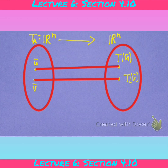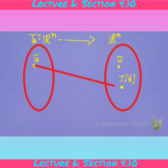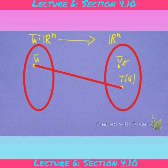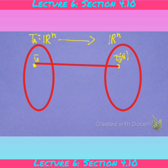Going back to those equivalence properties: if T is one-to-one it is automatically onto, which implies the matrix A is invertible. For the onto property, every point in the codomain must be the image of some point, because otherwise the inverse cannot map back to it. So both one-to-one and onto are needed for the inverse to exist.